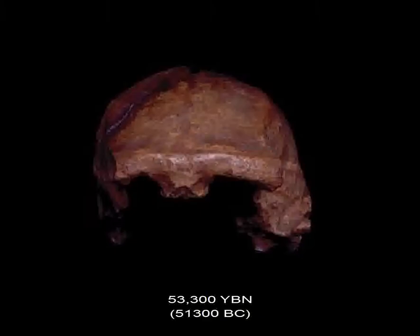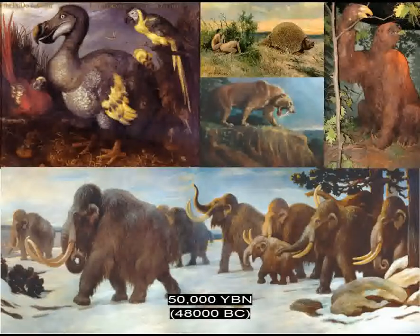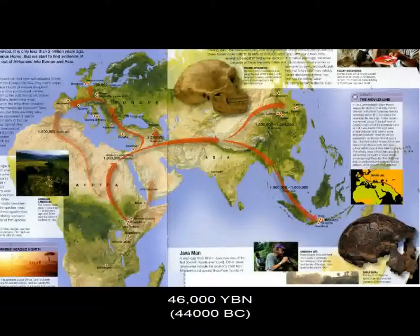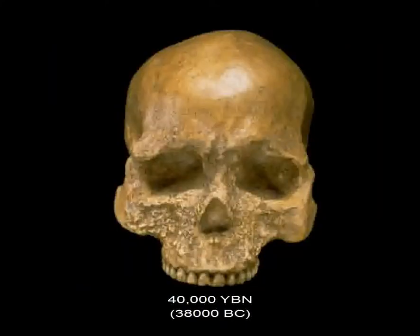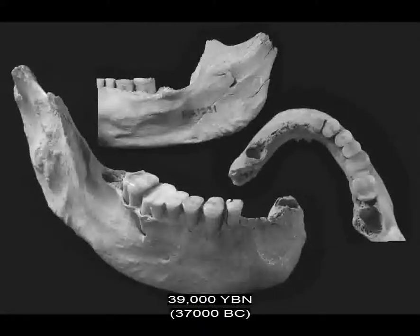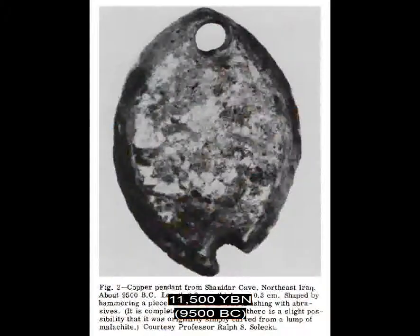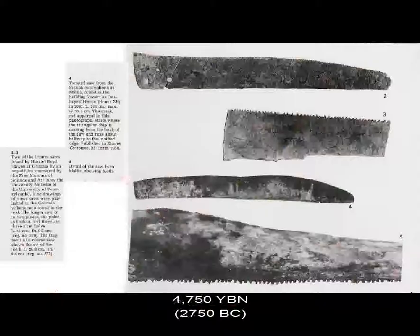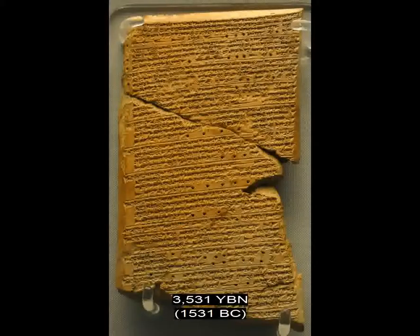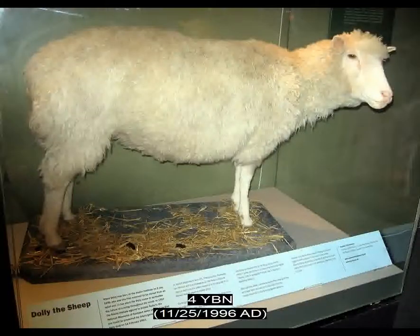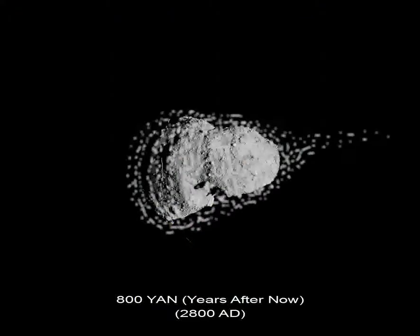Homo erectus extinct. Start of mass extinction of large mammals due in part to humans. Earliest water ship. Sapiens reach Australia from Southeast Asia. Earliest sapiens fossil in Europe. Sapiens reach China. Neanderthals extinct. Humans enter America. Humans shape metal objects. Pigs raised. Earliest metal saw. First planet recognized: Venus. Animal clone from somatic cell. Humans consume an asteroid.